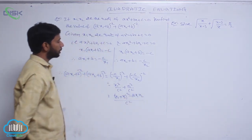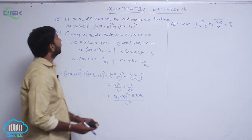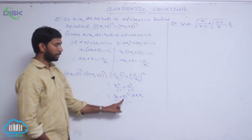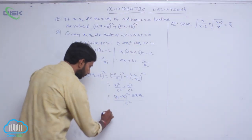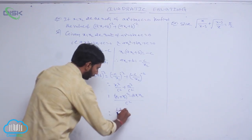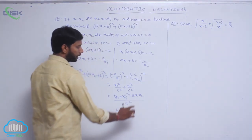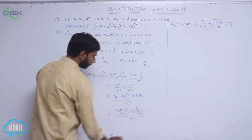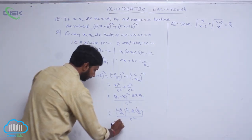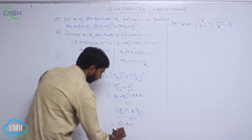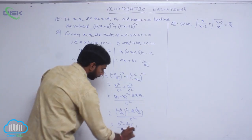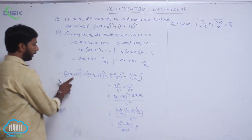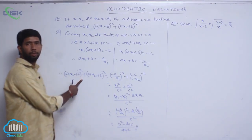Here x₁, x₂ are the roots of ax² + bx + c = 0, so sum of roots x₁ + x₂ = −b/a and product of roots x₁x₂ = c/a. Substituting: (−b/a)² − 2(c/a), all over c². After taking LCM, the result is (b² − 2ac) / (a²c²), which is the value of (ax₁ + b)⁻² + (ax₂ + b)⁻².